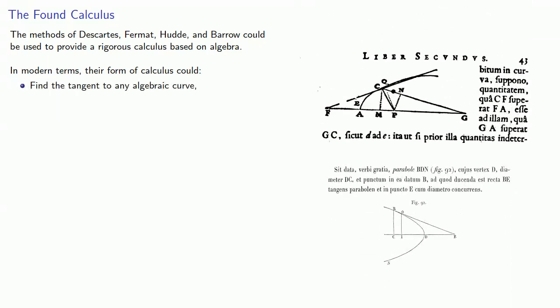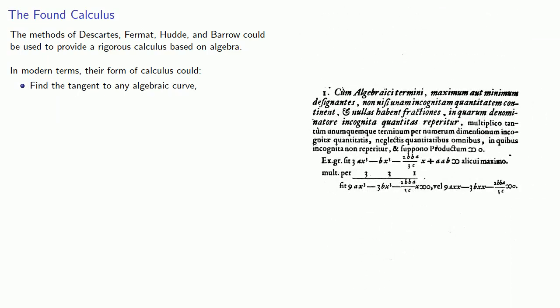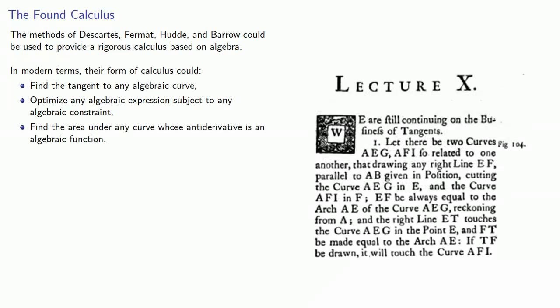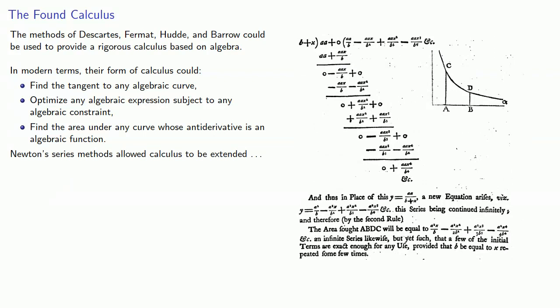The methods of Descartes, Fermat, Hooke, and Barrow could be used to provide a rigorous calculus based on algebra. In modern terms, their form of calculus could find the tangent to any algebraic curve, optimize any algebraic expression subject to any algebraic constraint, and find the area under any curve whose antiderivative is an algebraic function. Newton's series methods allowed calculus to be extended, provided we accept arguments based on infinitesimal quantities.